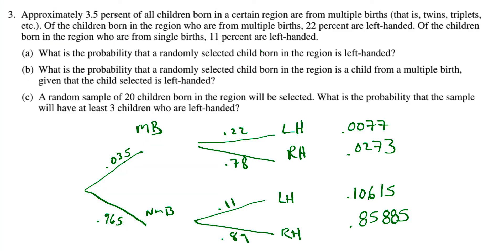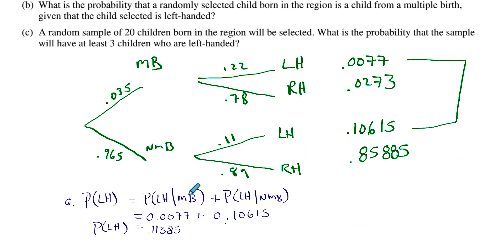So let's answer some questions now. What is the probability that a randomly selected child born in the region is left-handed? So out of all of these, which ones are left-handed? That would be this plus that. So if you add those two numbers together, that will give you your answer.